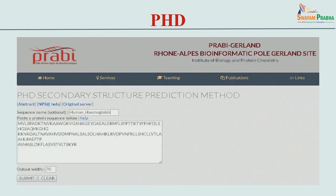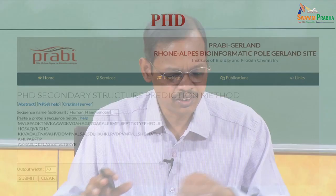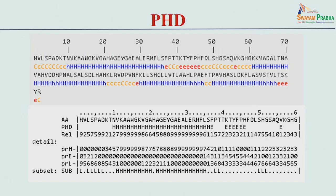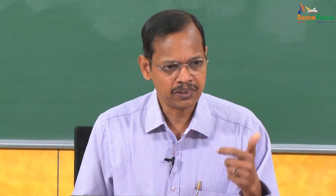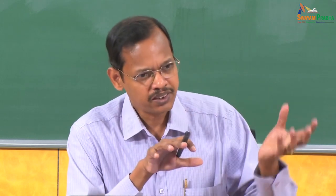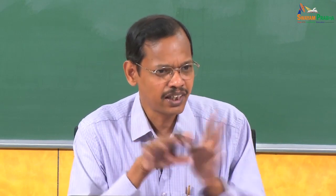This is the server: it takes the amino acid sequence as input, uses the information obtained from the sequence, and gives the desired secondary structure output. The PhD method is one of the highest-performing methods, achieving an accuracy of about 70 percent in the 1990s (around 1993). It uses a neural network to map information and predict secondary structures at high accuracy.